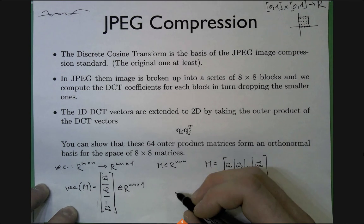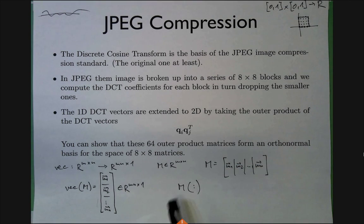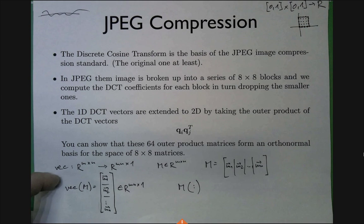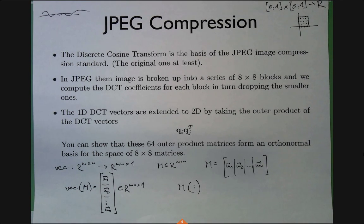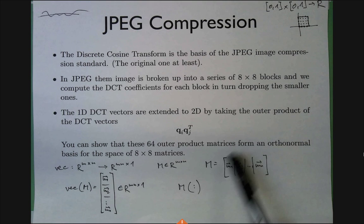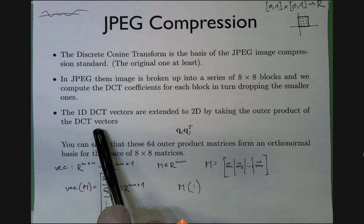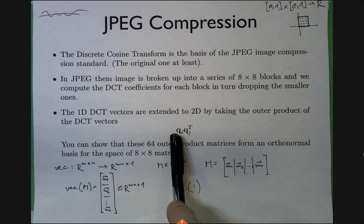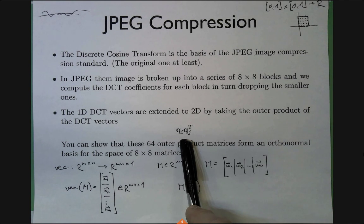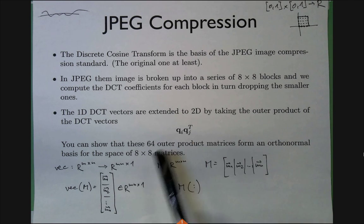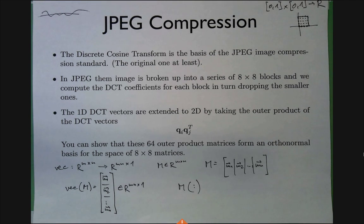Vectorization basically unrolls the entire matrix into a vector. It has beautiful mathematical properties I'll explain later when we know more about traces. The idea: take this 8×8 block, convert it to a column vector, then apply the same transform coding idea. We need to create a 2D DCT basis, and we do that by taking outer products of the 1D DCT vectors.